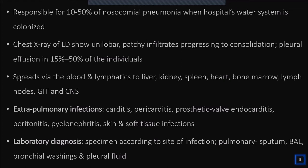Following infection, the bacteria enter the blood and lymphatics and disseminate to various organs — liver, kidney, spleen, heart, bone marrow, GIT, and CNS — initiating extra-pulmonary infections. Legionella pneumophila is primarily a respiratory pathogen, but under certain circumstances can cause carditis, pericarditis, endocarditis especially in those with prosthetic valves, peritonitis, pyelonephritis, and post-operative skin and soft tissue infections.